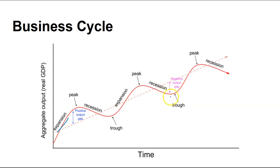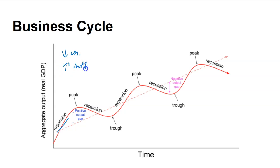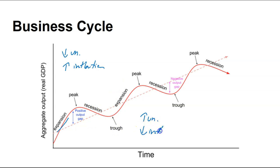We also have the recessionary gap or the negative gap, which is where my actual — the full red curve — is less than my potential, which is the dotted pale red curve. During times of expansion and peak, you'd assume there would be lower levels of unemployment and traditionally higher levels of inflation. During recessions and trough, we would have high levels of unemployment and probably lower levels of inflation would be the anticipation.